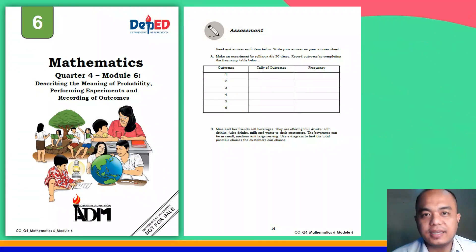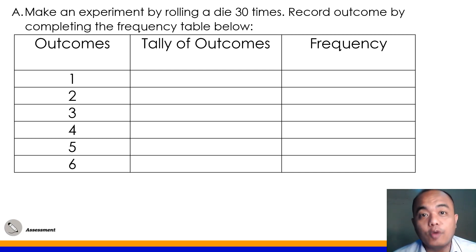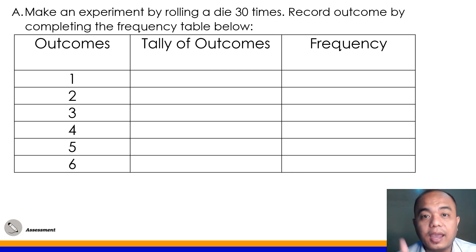Okay, let's have the assessment of your Module 6. Direction: make an experiment by rolling a die 30 times. Record the outcome by completing the frequency table below. This activity should be performed by you at home. I'll be showing you a sample of how to fill in this table, but the data in my table may vary from your actual results at home. All you need is a die and you have to roll it 30 times. Just record the outcome in your table.